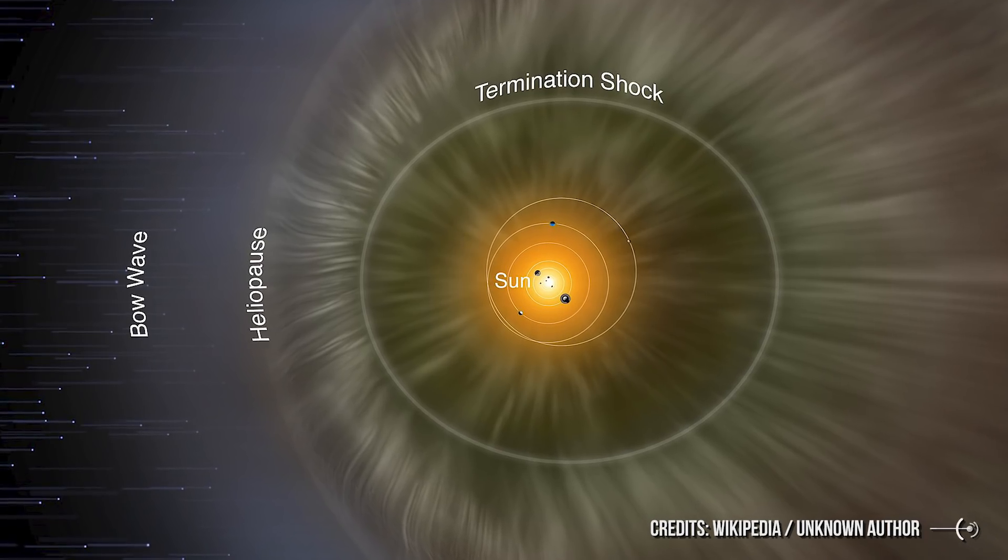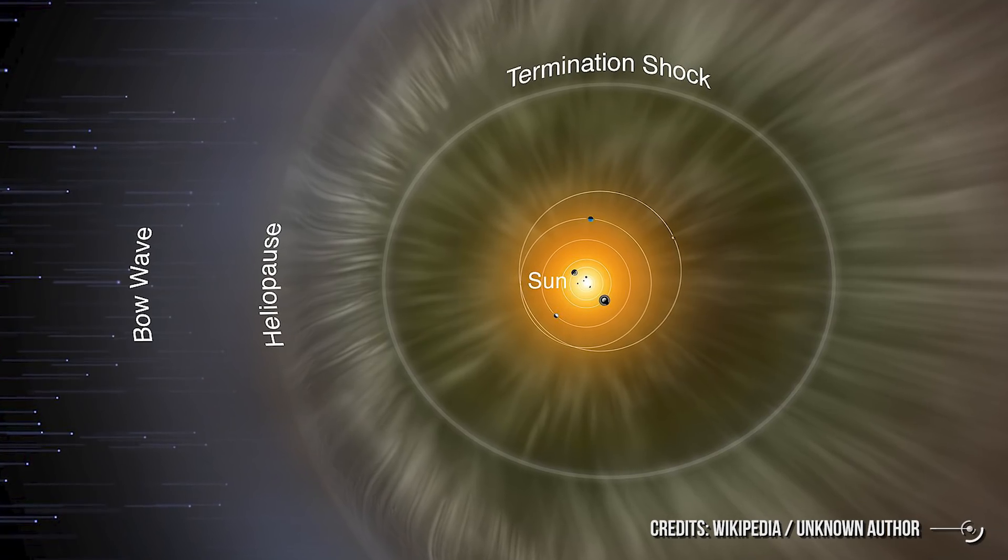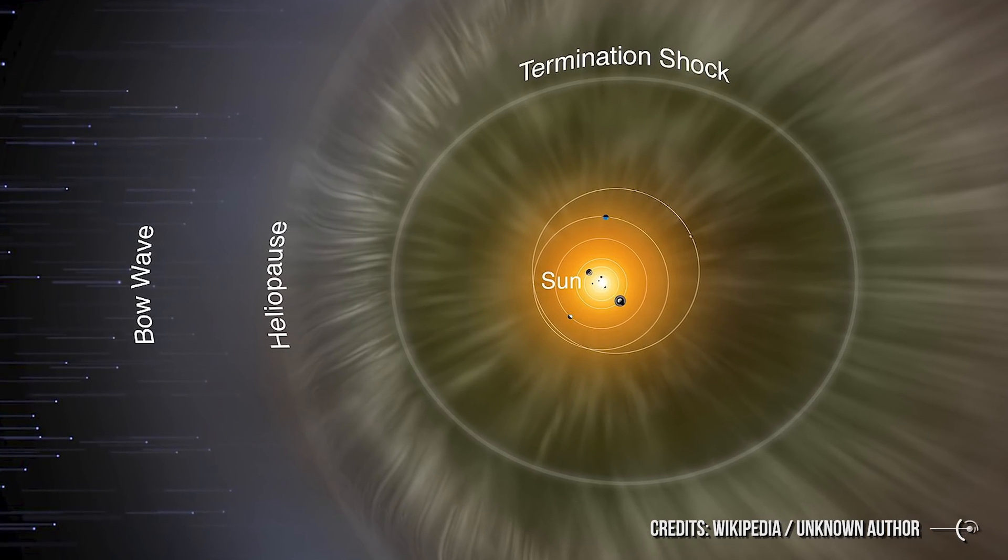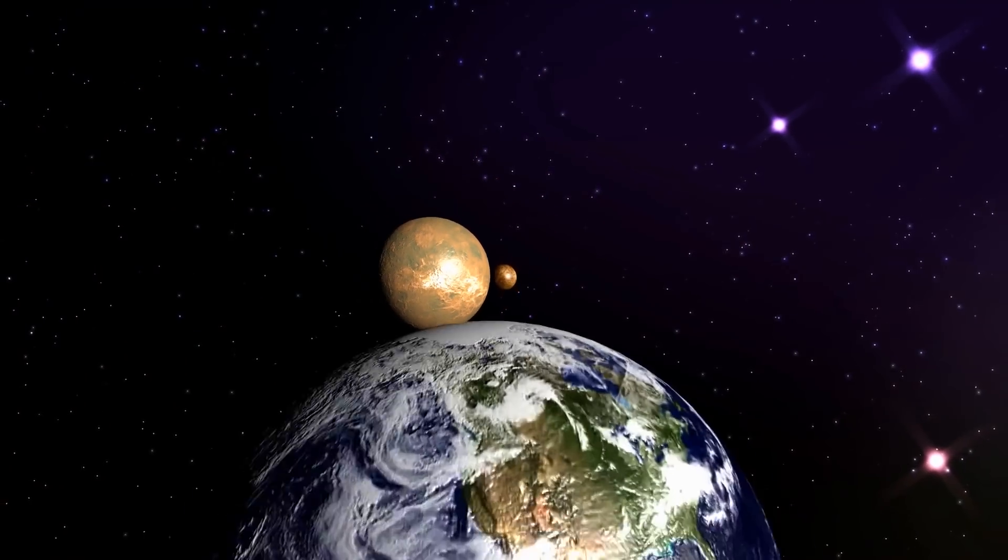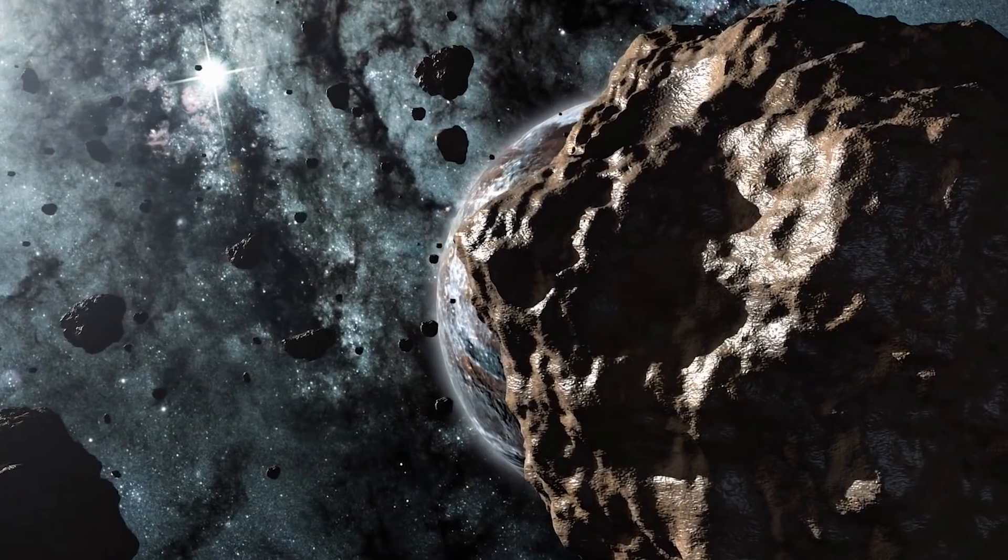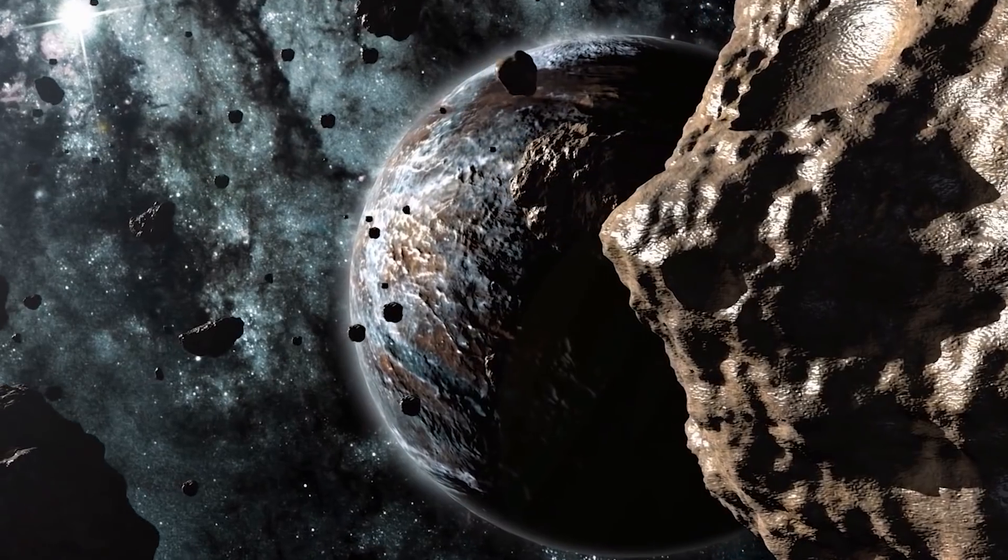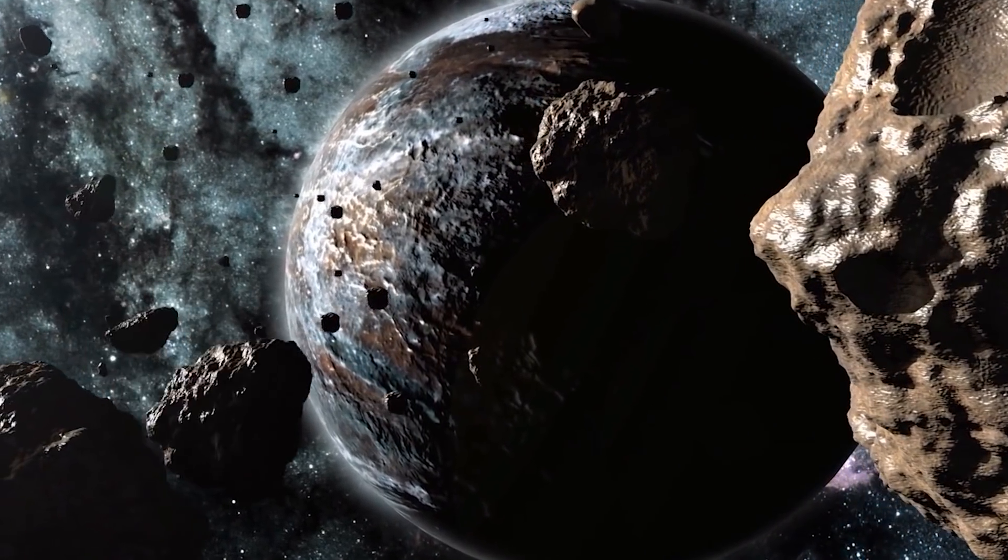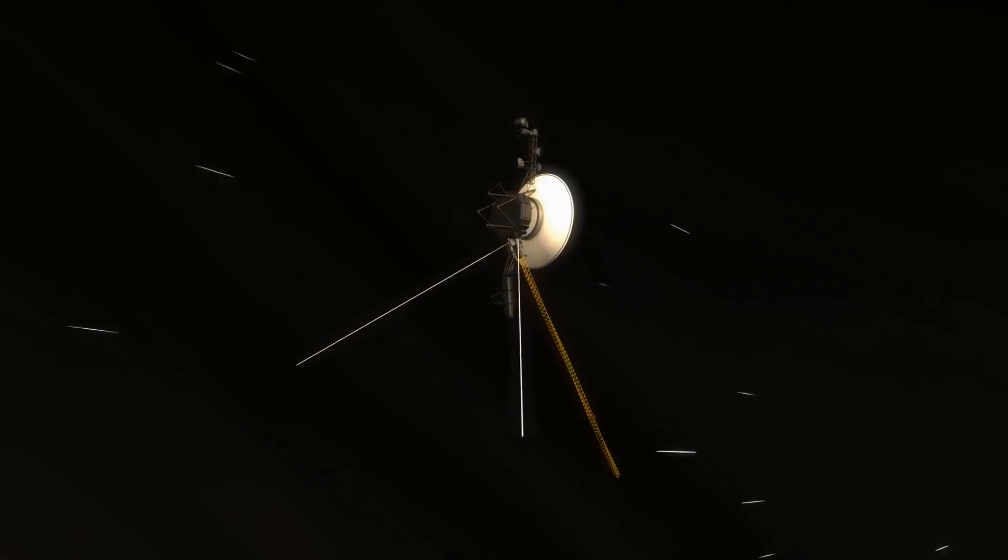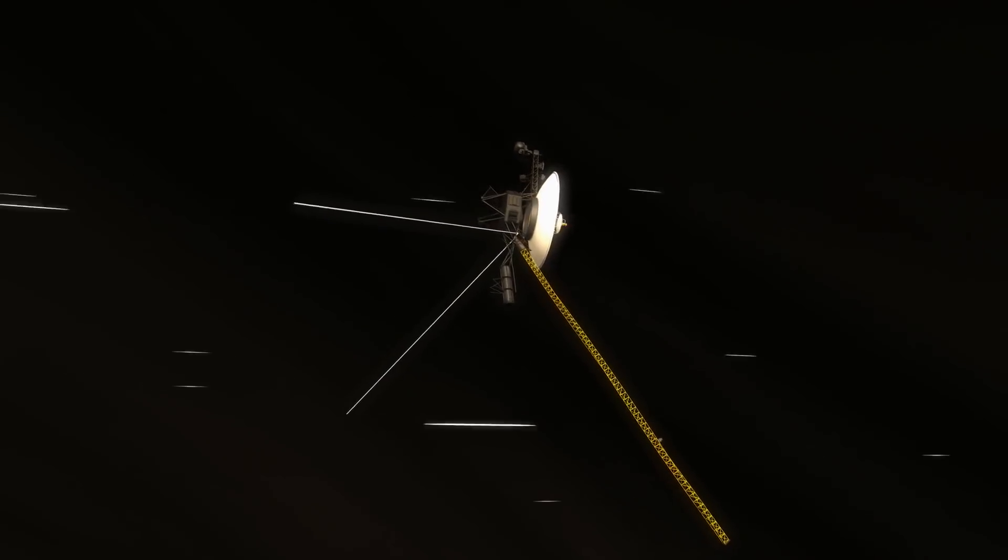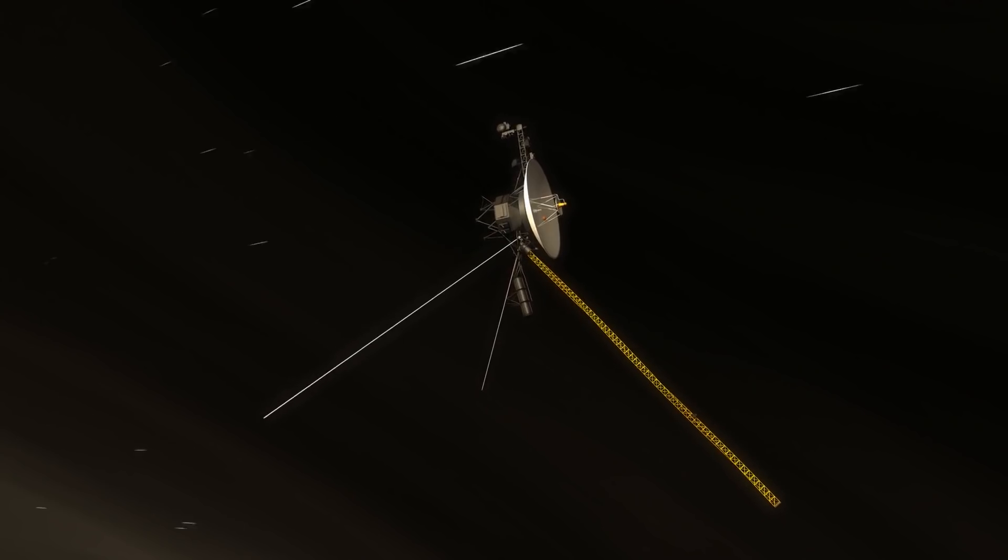However, it should be noted that the Heliopause is only the extreme limit of the heliosphere, and not that of the solar system, as it is often said by mistake. The solar system is a physical whole dominated by the gravity of the Sun, which extends its influence beyond the Kuiper belt and up to the Oort cloud, about two light-years away. It will take about 300 years for Voyager 2 to reach the inner edge of the cloud, and probably not less than 30,000 years to overcome it and reach its outer edge.